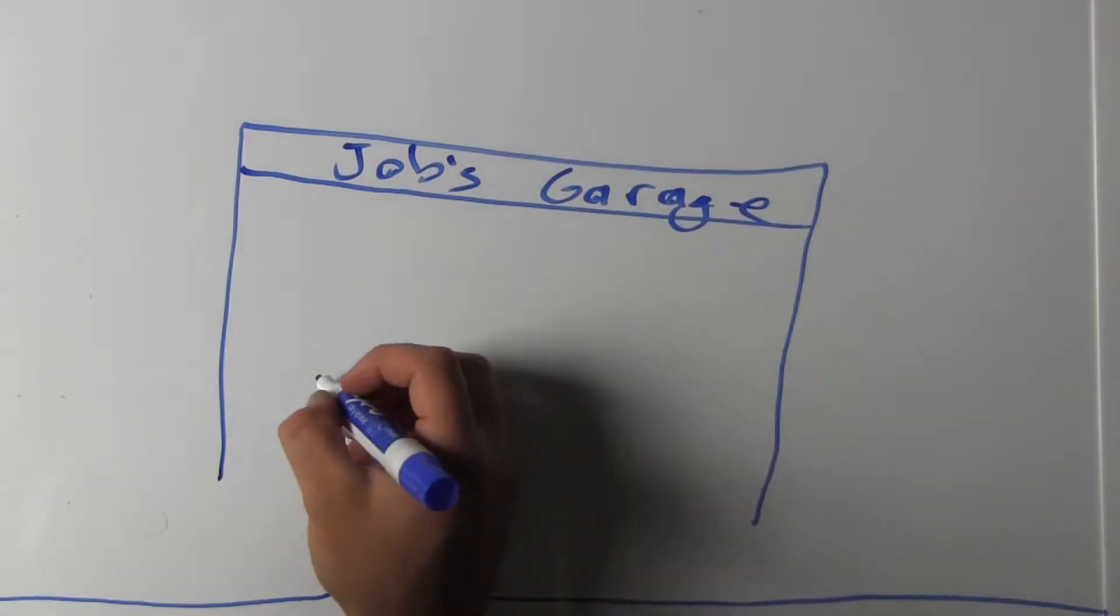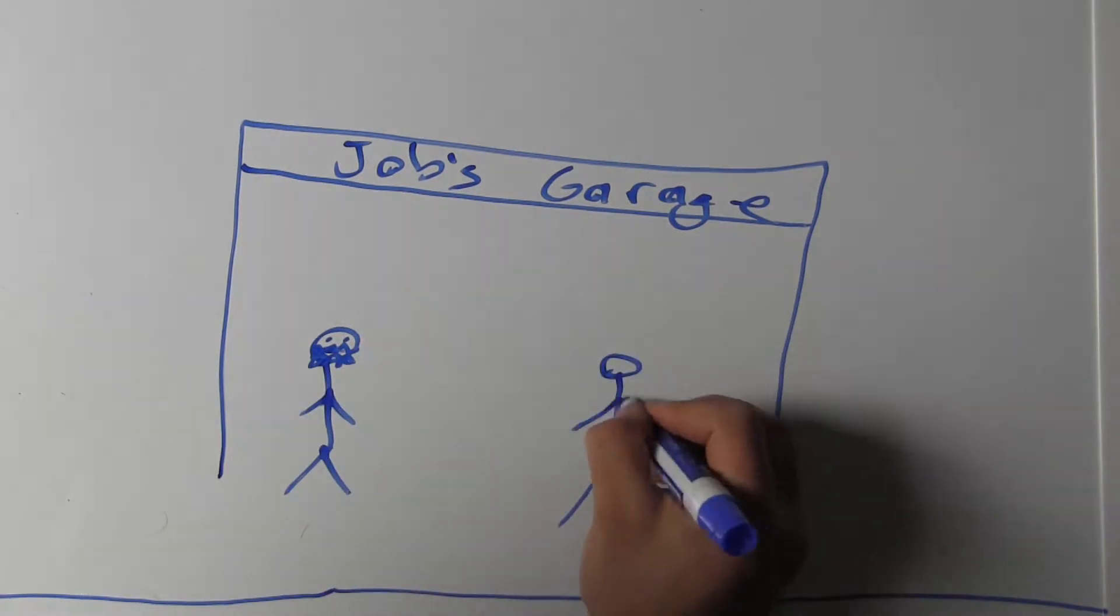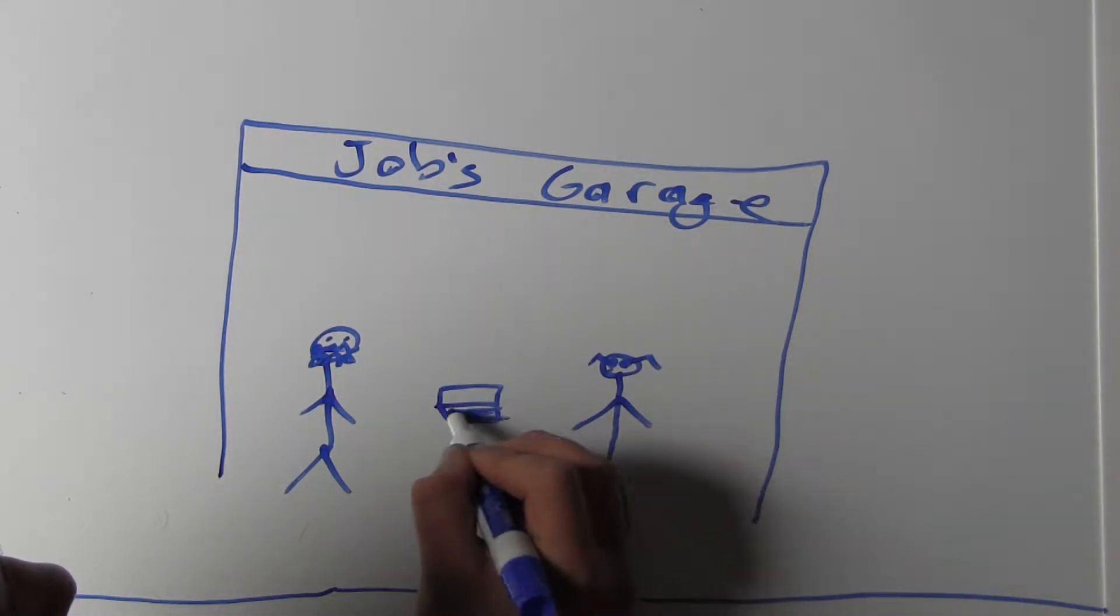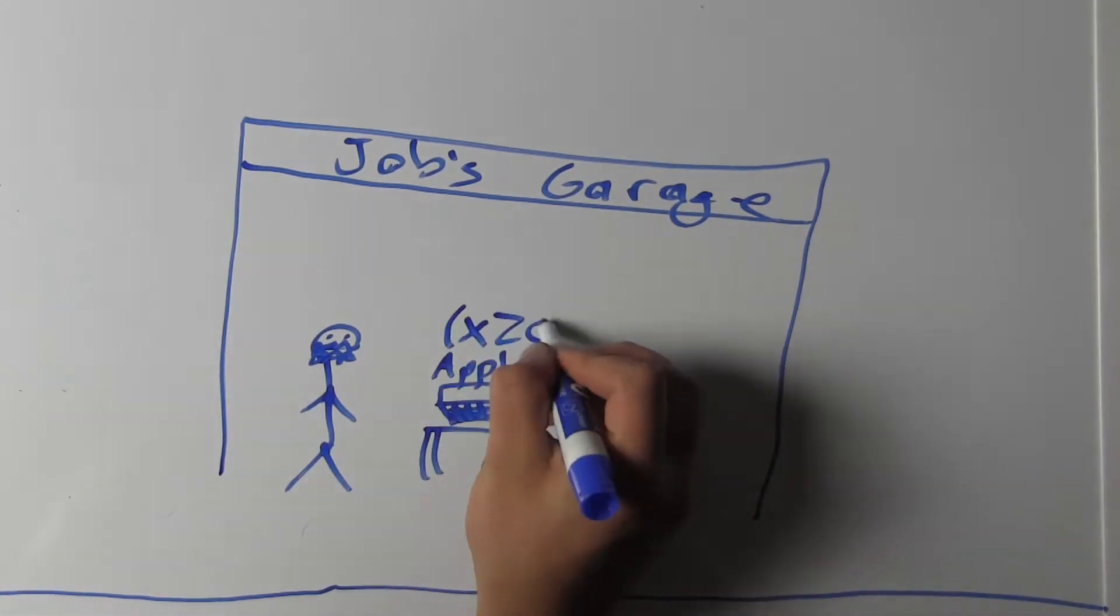The first computer that the two created was called the Apple One, which they actually created in Jobs' garage, and they made about 200 computers and sold almost all of them.